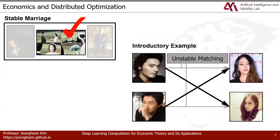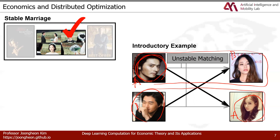The next economic theory is stable marriage. Consider very famous actors in South Korea — one is matched with his wife. The current matching is not stable because each person's first preference is someone other than their current partner. Both are with their second priority. To make the system stable, we use stable marriage theory, specifically the Gale-Shapley algorithm.